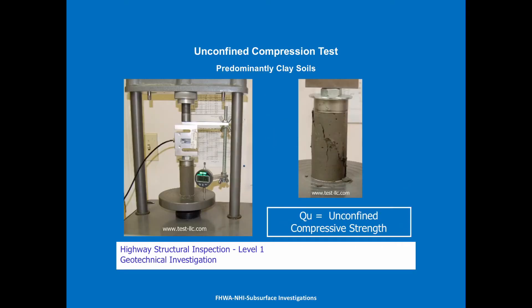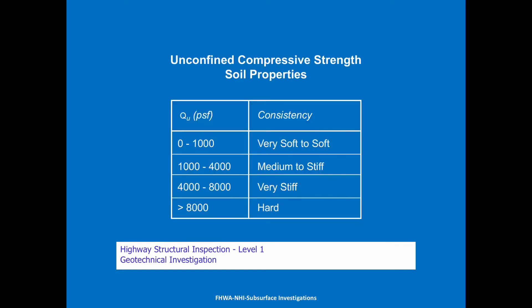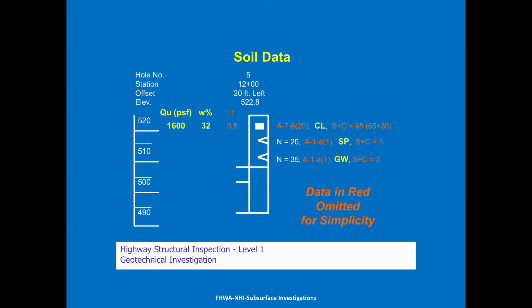The unconfined compression test gives us the strength of our soil — just like a compressive strength of concrete, we can get a compressive strength of soil. We mold it in a cylinder and break it. Medium to stiff is 1,000 to 4,000 — but note that on concrete that's 4,000 PSI, while on soil it's 4,000 PSF (pounds per square foot), which is a much larger area giving a much different consistency and density. That value is the QU on your plans. In one example, the QU is 1,600 PSF with 32% water content, and the CL denotes a clay with low plasticity.